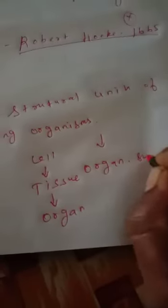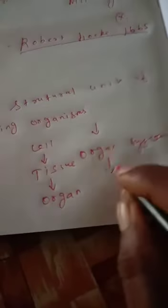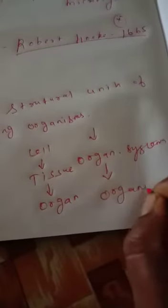Cells perform a specific function; a group of cells performing a specific function is called tissue. Tissue performing a specific function forms an organ. An organ performs a specific function, and a group of organs is called an organ system. The organ system performing different functions makes up an organism.